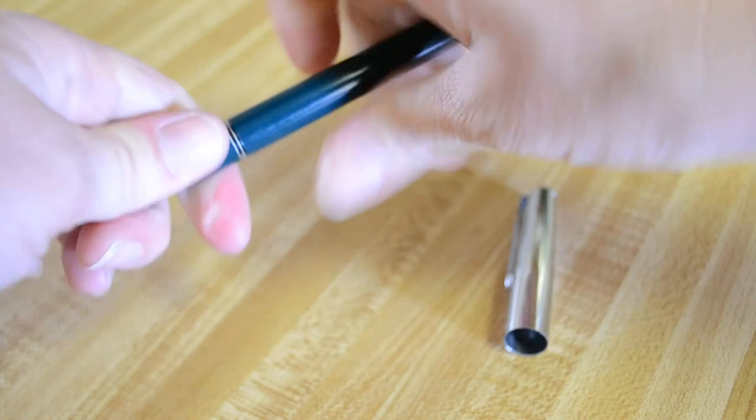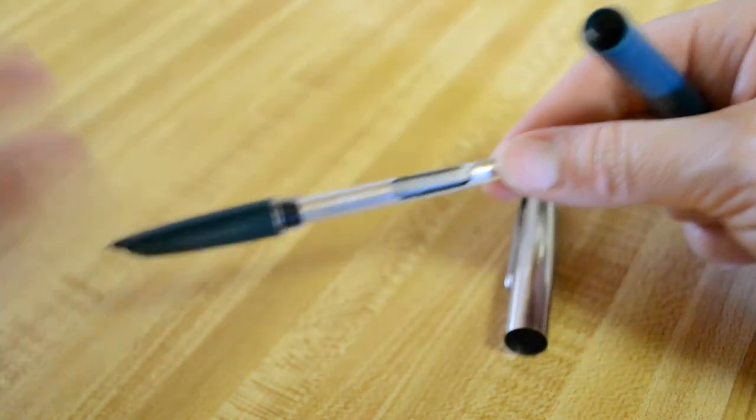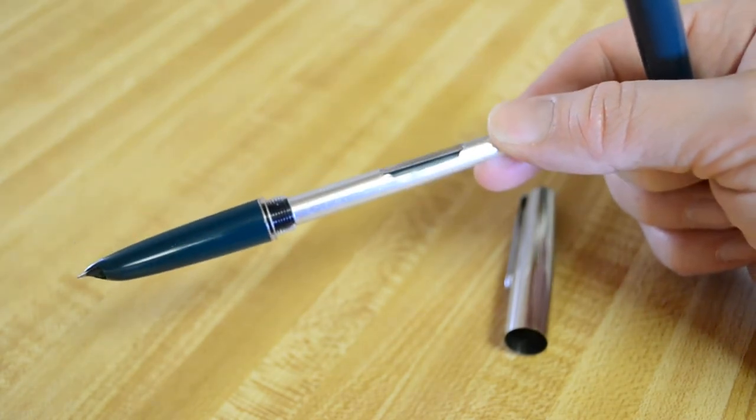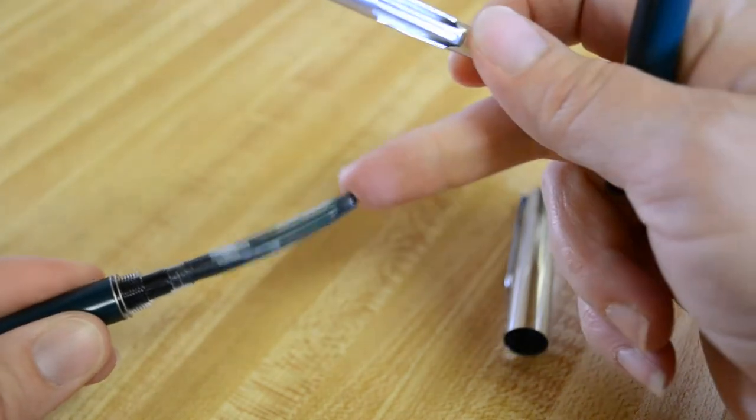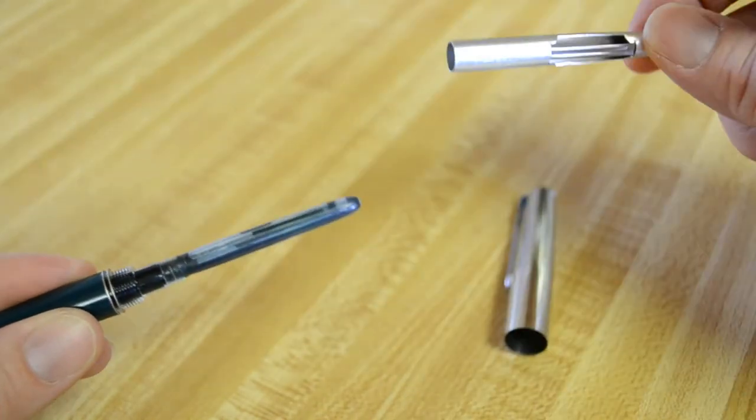Let me see if I can show you the inside here. It comes with a button converter. I can take it off and show you. So this is just a flimsy kind of plasticky rubber sack that is permanently attached to the pen.